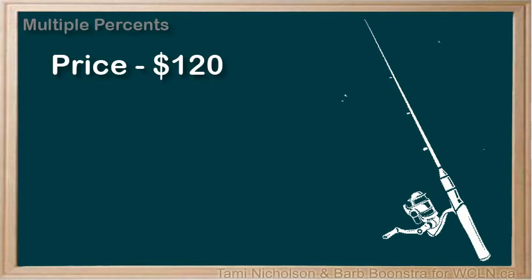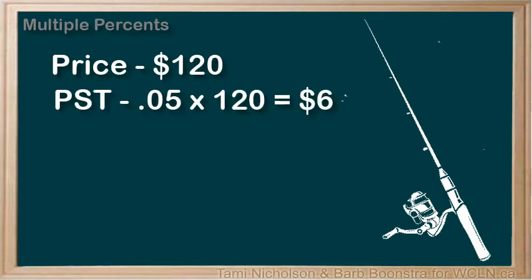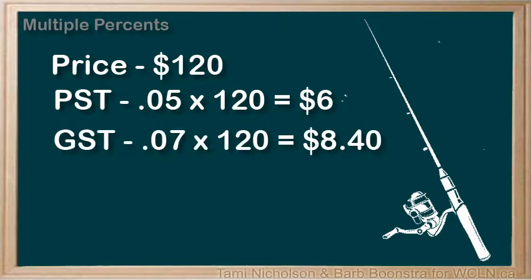First, let's calculate the PST, 5% of $120. Change 5% to a decimal and multiply it by 120. PST is $6. Now calculate the GST, 7% of $120. Change 7% to a decimal, .07, and multiply .07 times 120 to get $8.40. The GST is $8.40.